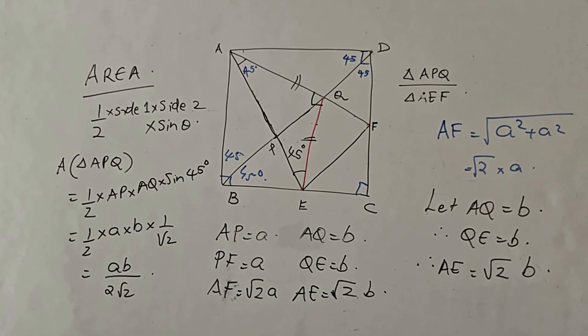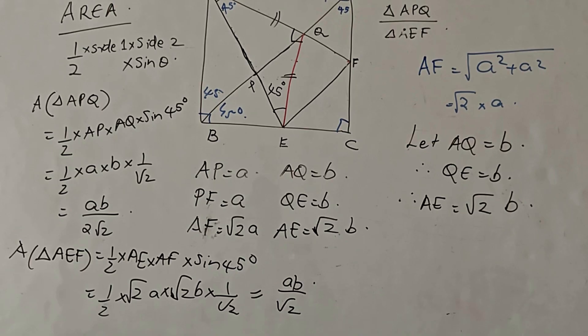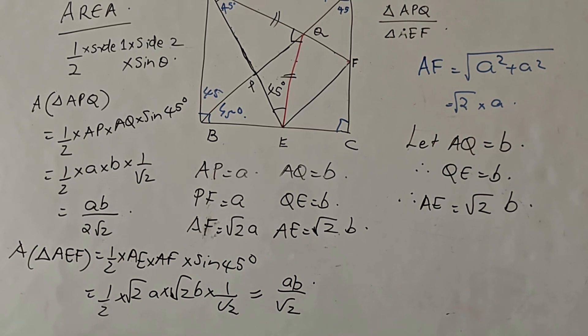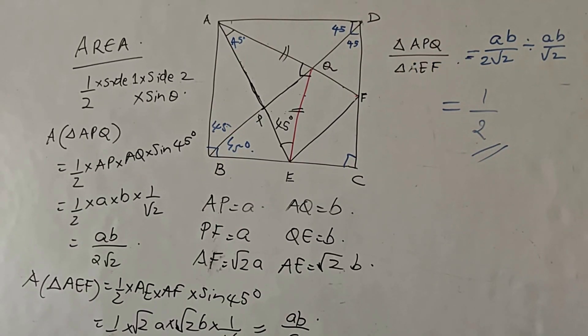Now I will write down the measurement of the area of the triangle AEF. The area of triangle AEF I have found out as AB by root 2. We need to find out the ratio of the areas of triangle APQ and triangle AEF. So we will divide both of them and see what we are getting. You will get the final answer as 1 by 2.